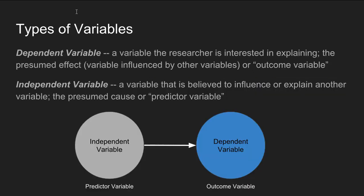Another way to think about types of variables is distinguishing between the dependent and the independent variable. A dependent variable is the variable the researcher is interested in explaining — it's the presumed effect, influenced by other variables, sometimes referred to as the outcome variable. Independent variables are the variables believed to influence or explain another variable — they are the presumed cause or predictor variable.